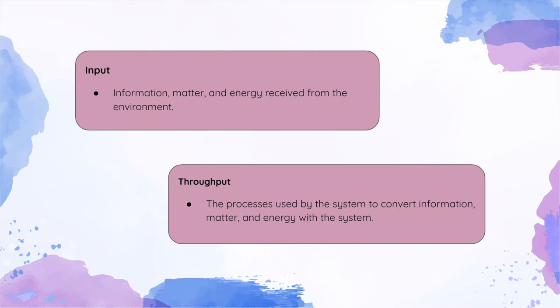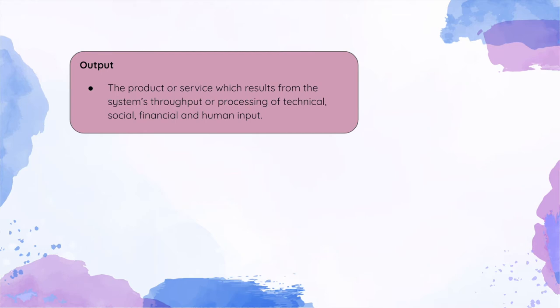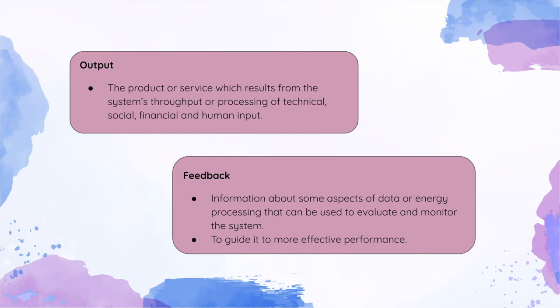Third, output refers to the product or service which results from the system's throughput or processing of technical, social, financial, and human input. Fourth, feedback — the information about some aspects of data or energy processing that can be used to evaluate and monitor the system, and to guide it to more effective performance.